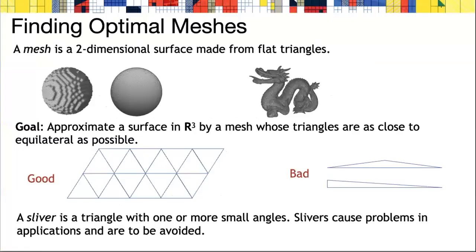Let me introduce the basic idea. We're interested in finding high quality meshes that approximate a given two-dimensional surface in three space. By mesh, we mean a two-dimensional surface made from flat triangles. We'd like these triangles to get a nice approximation of the surface and have angles as close to 60 degrees as possible.